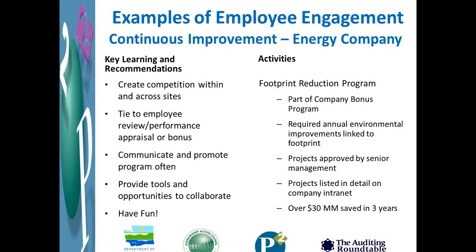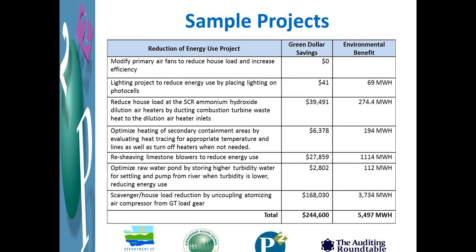Another example of an employee engagement program — communicating around the need for continuous improvement — was an energy company that developed a footprint reduction program. They tied it to part of the company bonus and required annual environmental improvements linked to individual facilities' footprints. Projects had to be approved by senior management and were listed in detail on a company intranet. Their recommendations for engaging employees: create competition within and across sites, tie the program to employee review or bonus, communicate about the program often and visibly, and provide tools and opportunities to collaborate. There were over 100 projects implemented over a period of three years.